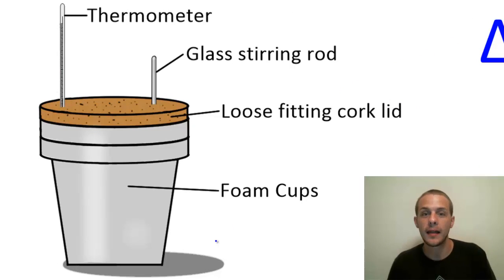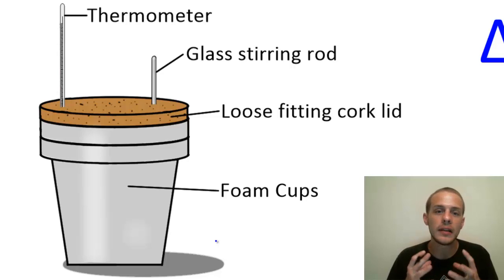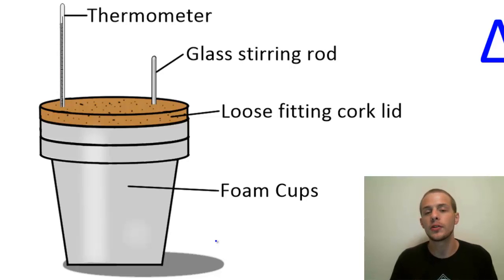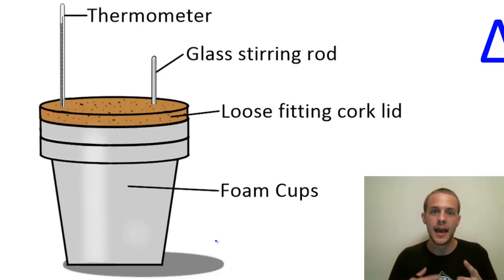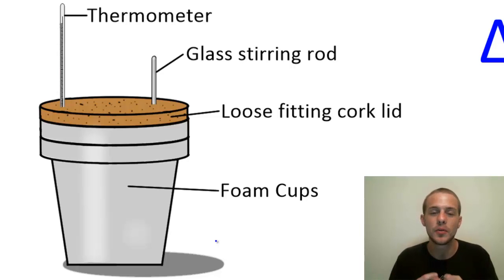This is a constant pressure calorimeter and it's a very simple design. You have two foam cups, one placed inside the other, which provides an insulated environment to keep the inside of the cup closed off from the rest of the laboratory. Sitting on top is a loose-fitting cork lid. The lid fits loosely to make sure that the pressure does not change over the course of the reaction — if the lid fit tightly, gas products would cause a pressure increase.